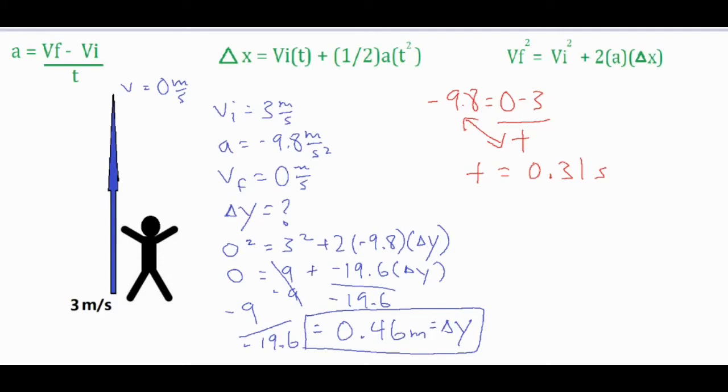Now if I do that, that isn't the total hang time. That's the amount of time it took to get to zero, which is the very peak of their jump, which is only half of the time because there's a certain amount of time to rise and a certain amount of time to fall, which is equivalent to one another. So if I take that time to rise and multiply it by two, then my total hang time comes out to 0.62 seconds.